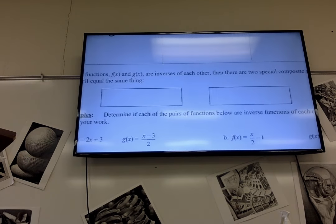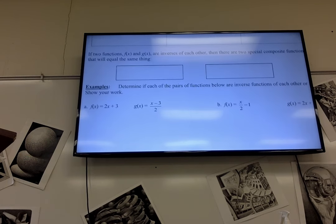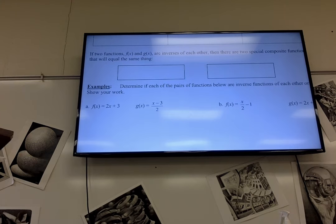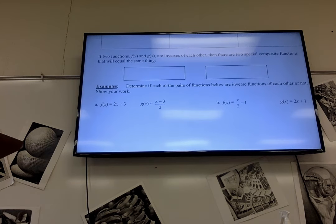Which leads to what we have down here. If two functions are inverses of each other, f and g is what they're called here, then there are two special composite functions that will both equal the same thing. So, f of g of x will equal x and g of f of x will also equal x. And that's what should happen because if they're inverses of each other, they should undo the other one. That's what an inverse does. So, everything goes away except for the x.